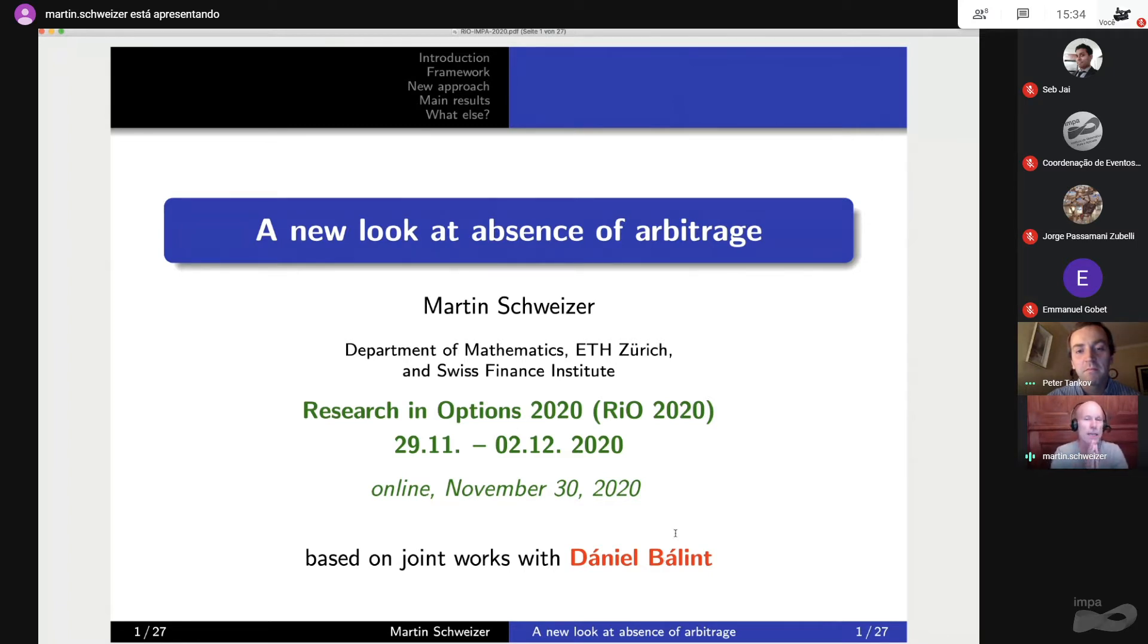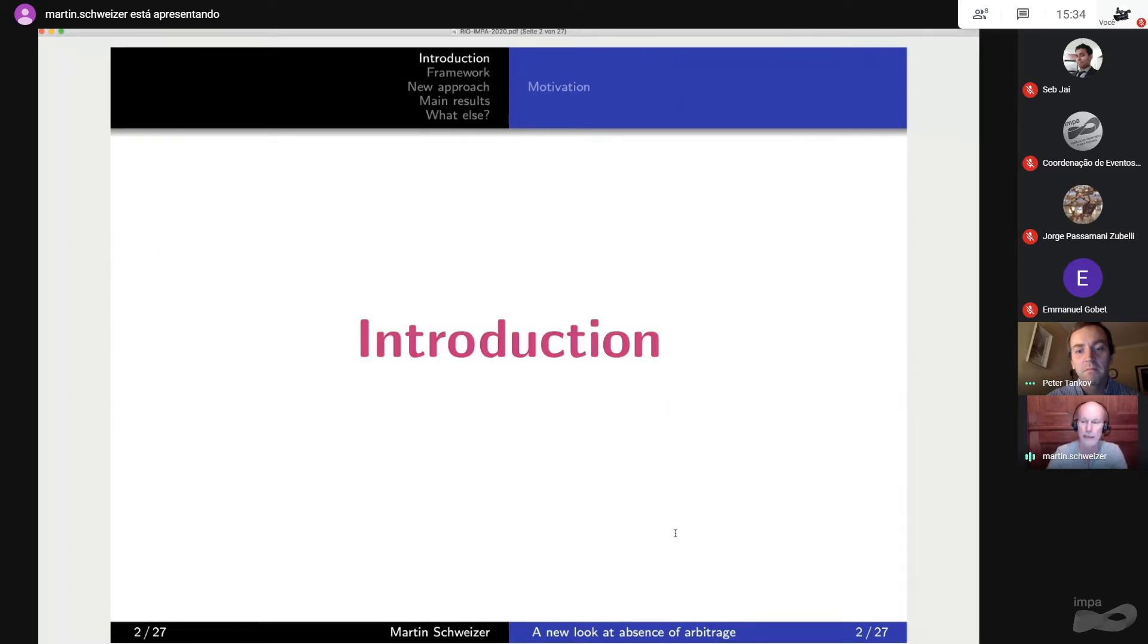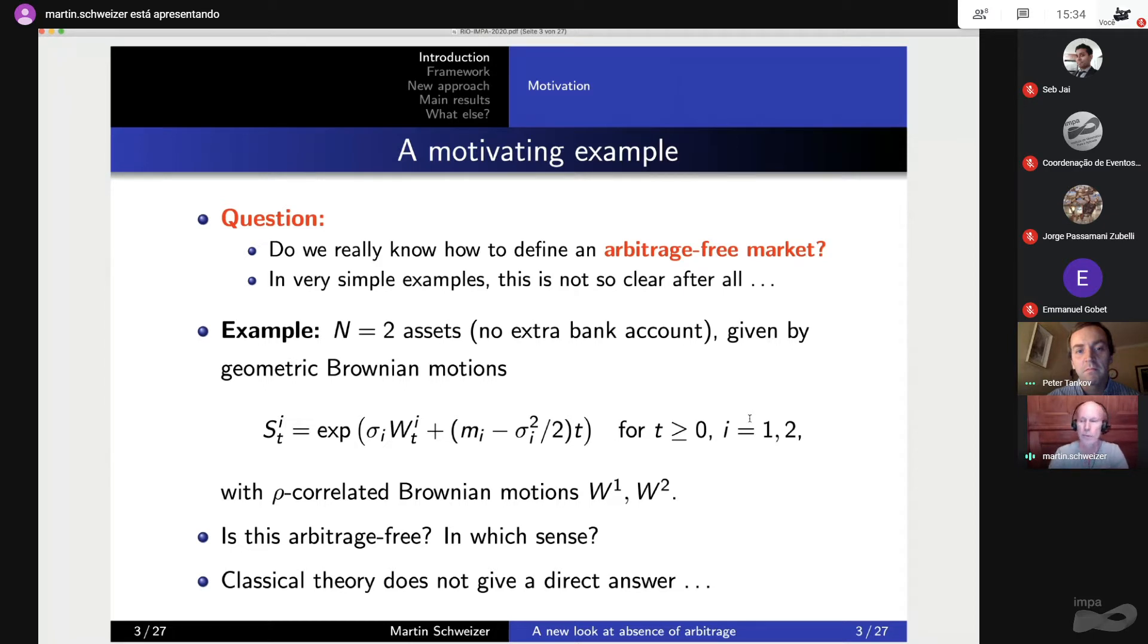So what I want to look at is absence of arbitrage, a fresh look. And I want to argue, first of all, that when we think we know what absence of arbitrage is, we don't really. So here is a very simple example for you to think about. Say you have a market with two assets, just two assets, there's no bank account, just two shares. And these are modeled by geometric Brownian motions, driven by two Brownian motions. Maybe the underlying Brownian motions are correlated or maybe they are not. And this is all that you have in your market. And now the question is, is this market arbitrage-free? And if it is or not, in which sense?